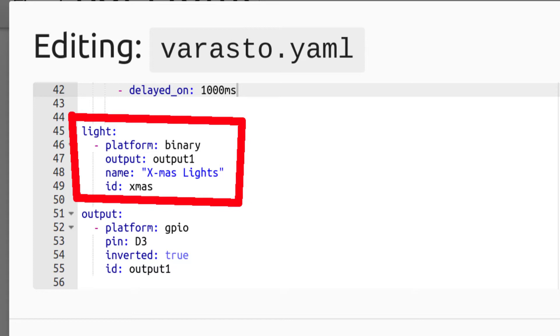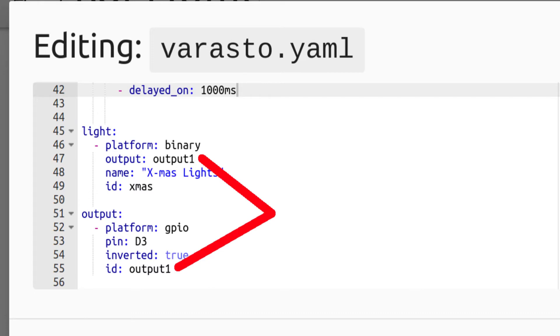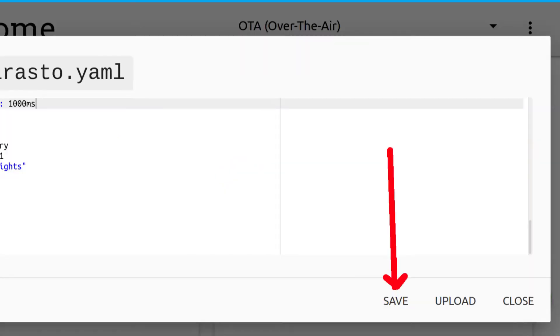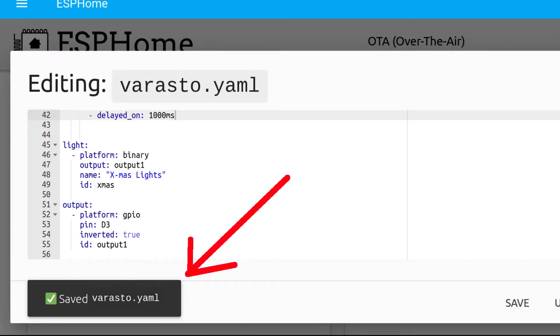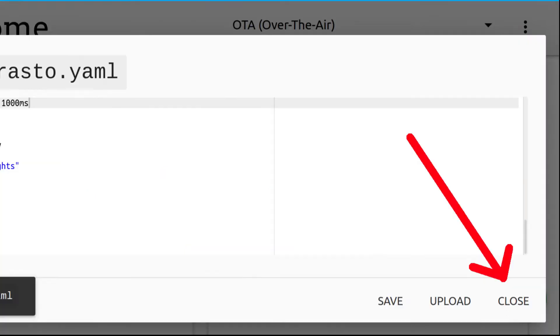Next we're gonna configure the actual light entity. So paste in this code. Here you need to reference that output we just created. Next give your light some name and some ID. Then press save and wait till it says that it's in fact saved. And then close the editor.